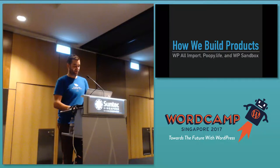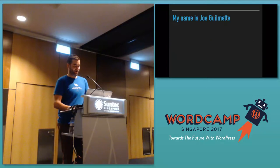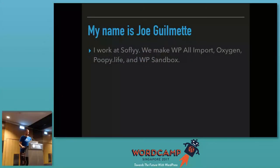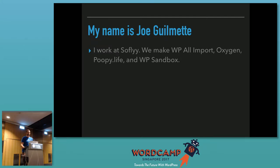This talk is about how we build products. My name is Joe Gilmett and I work for a company called SoFi. We make a couple different things. We make WP All Import, a WordPress plug-in to help people import data into WordPress. We make Oxygen, which is a visual site builder. And then we also recently released Poopy.life and WP Sandbox.